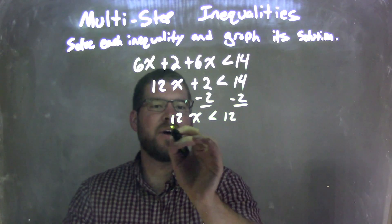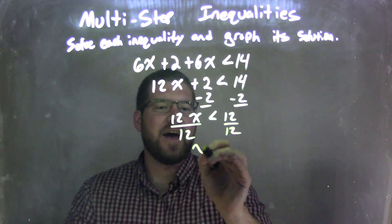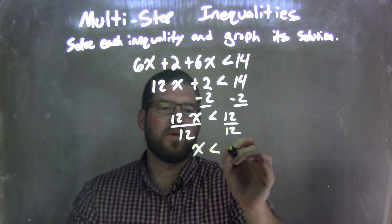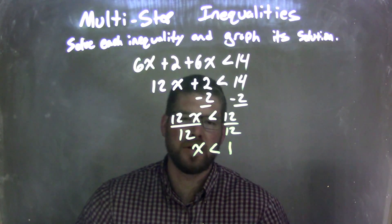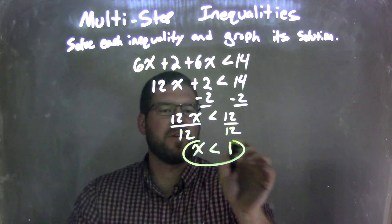I then can divide by 12 on both sides, giving me x by itself is less than 12 divided by 12 is 1, and there we have it. We have x isolated and it's less than 1.